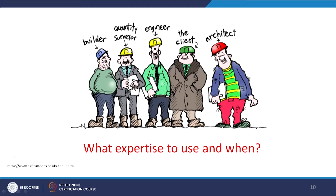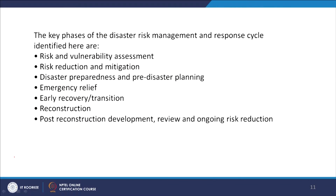We have a set of expertise: surveyors, engineers, and architects. The main question is: what expertise to use and when? The team identified seven phases: risk and vulnerability assessment; risk reduction and mitigation; disaster preparedness and pre-disaster planning; emergency relief; early recovery and transition; reconstruction; and reconstruction development, review and ongoing reduction. This covers pre-disaster, during disaster, and post-disaster phases.